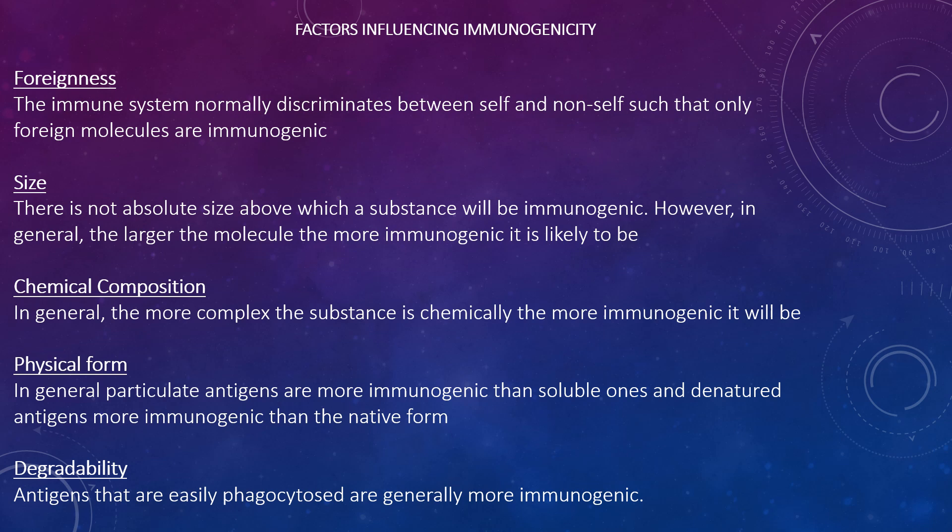For the physical form, in general particulate antigens are more immunogenic than soluble ones, and denatured antigens are more immunogenic than the native form. For degradability, antigens that are easily phagocytosed are generally more immunogenic, because most T-dependent antigens require that the antigen be phagocytosed, processed, and presented to helper T-cells and antigen-presenting cells.